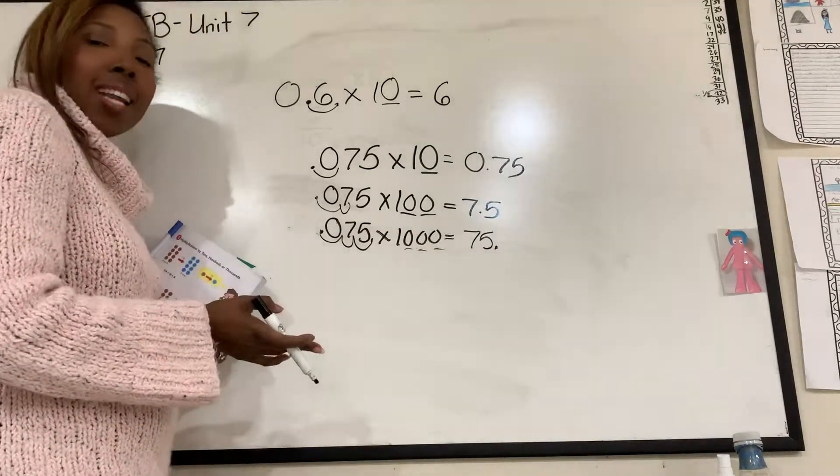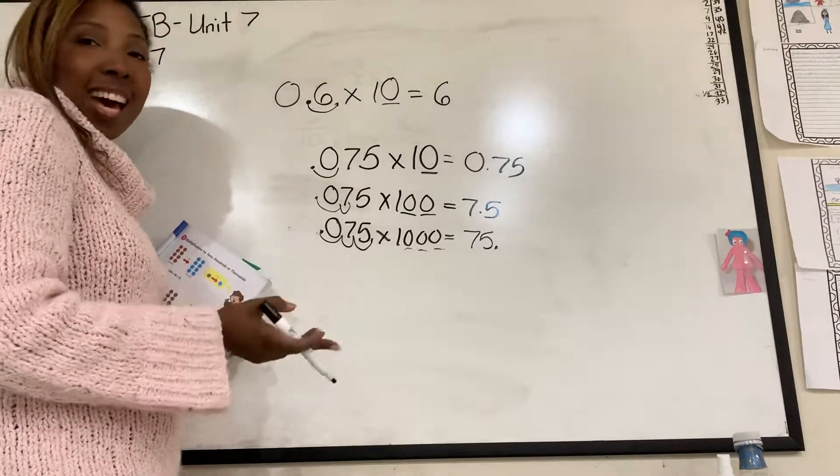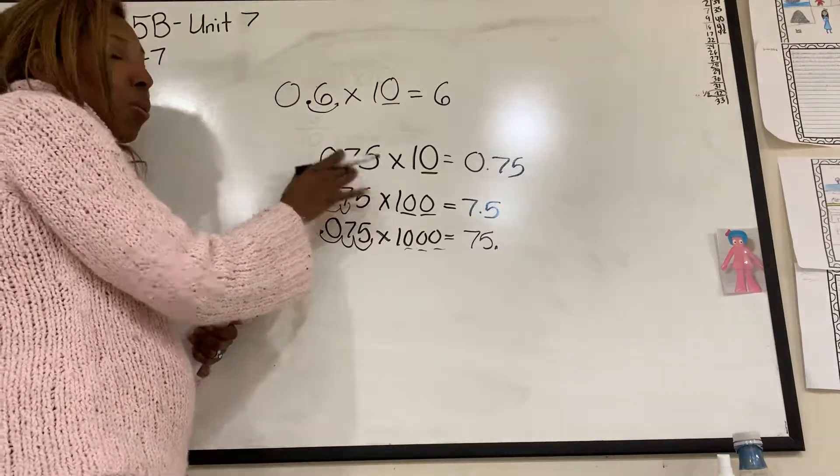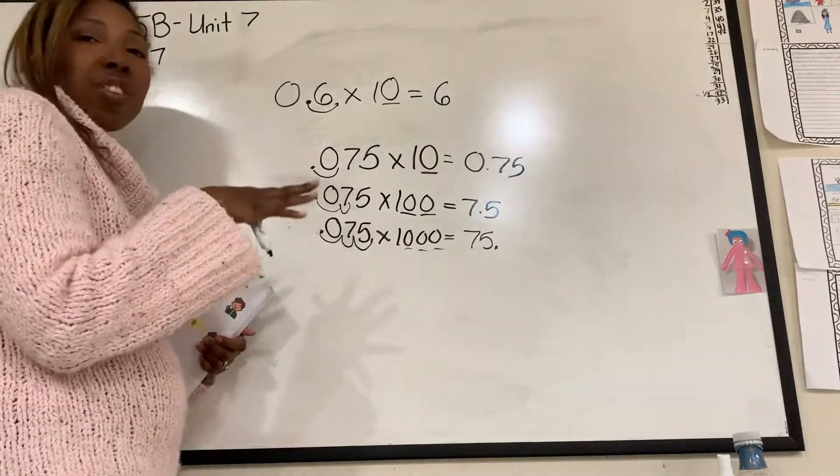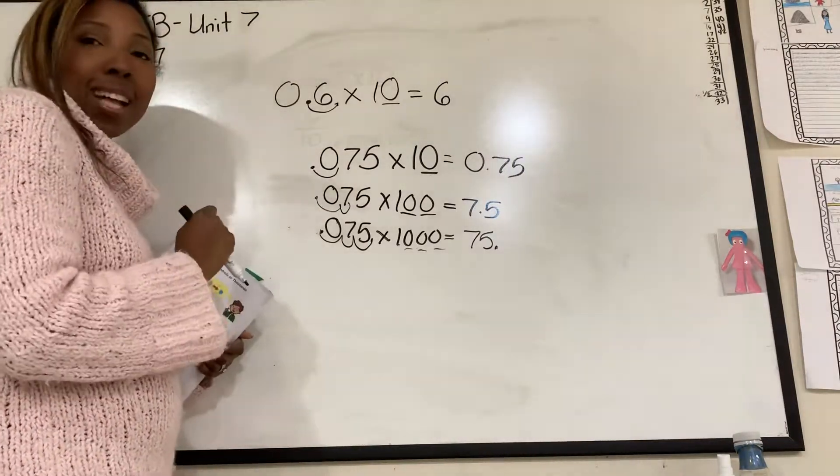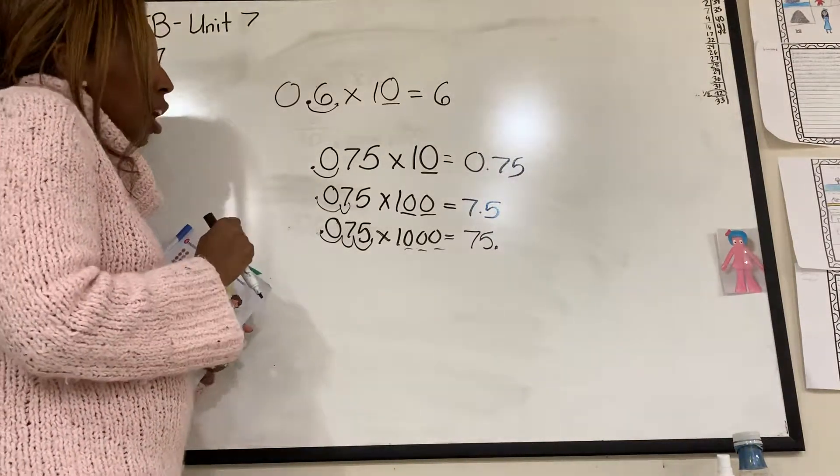So when you see 10, 100, 1,000, 10,000 times a number with a decimal, you don't even have to figure it out. All you do is count the zeros and move that many decimal spots over.